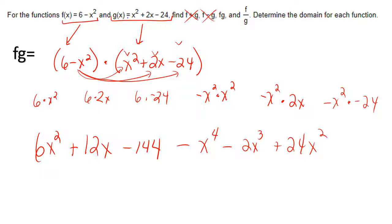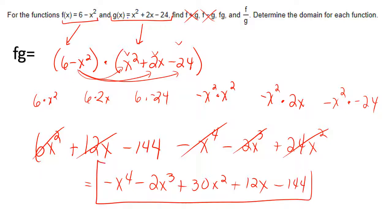Now, let me combine any like terms and put it in descending order. That would be a negative x to the fourth. Negative 2x to the third. I can combine the 6x squared and the 24x squared to get 30x squared. Then I also have 12x. And negative 144. All of this would be my final answer.